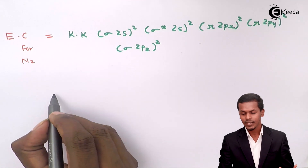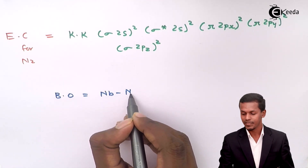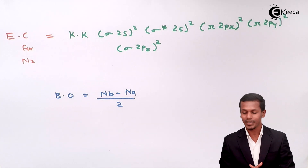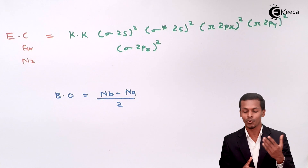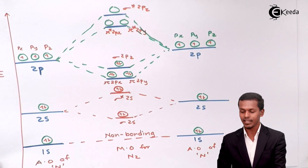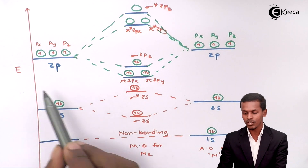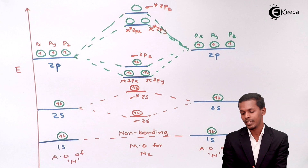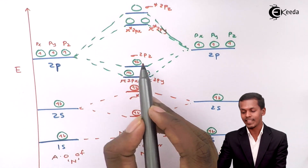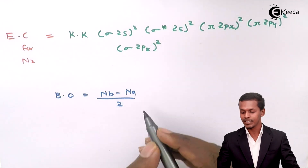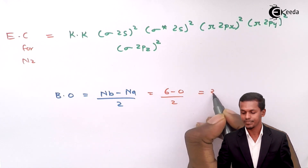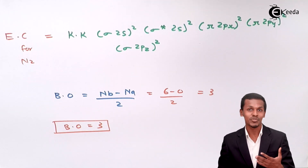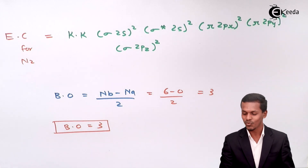Talking about the bond order, we know it as (Nb − Na) / 2, where Nb represents the electrons in the bonding orbital and Na represents the electrons in the anti-bonding orbital. We are concerned with the 2p subshell only, as it is the outermost subshell responsible for bonding. We have 6 electrons in bonding orbitals and 0 in anti-bonding orbitals, so bond order = (6 − 0) / 2 = 3. This indicates the two nitrogen atoms have a triple bond.